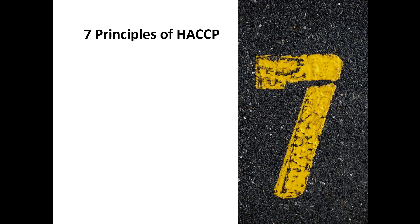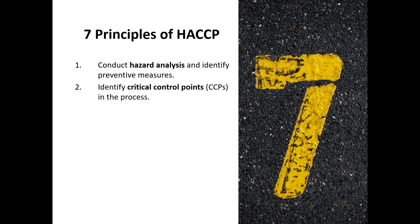There are seven principles of HACCP — in other words, when implementing a HACCP programme you have to do these seven things. One: you conduct a hazard analysis and identify preventative measures, so you look at your processes and determine what hazards could be present. Two: you identify critical control points — those are the points in the process that are critical for food safety.